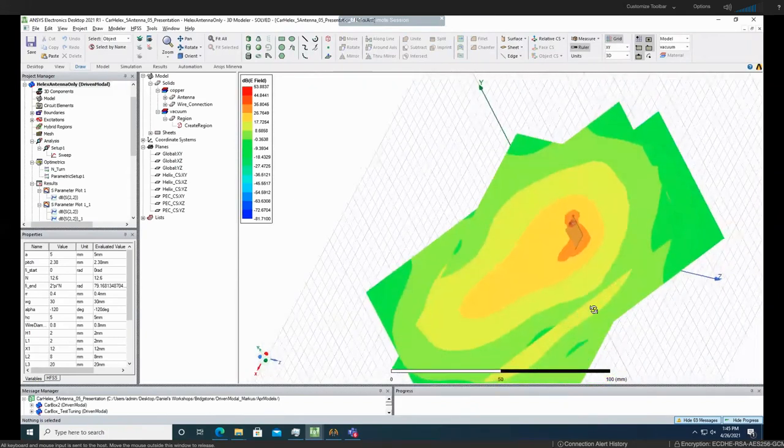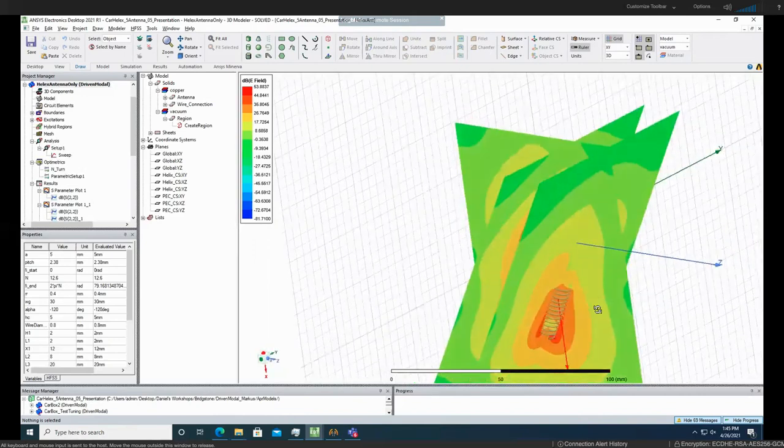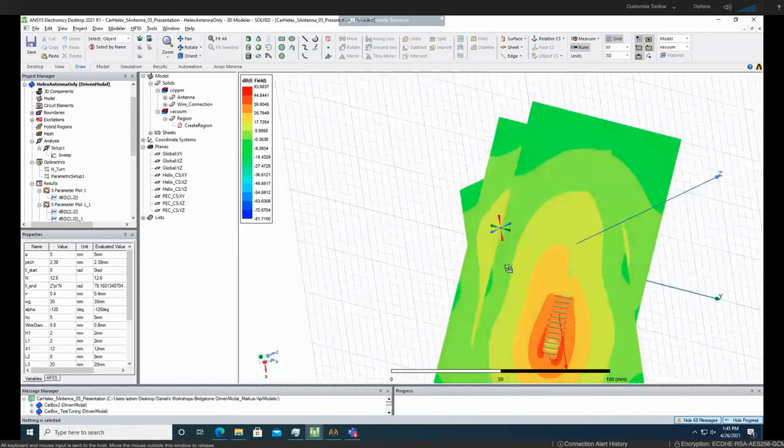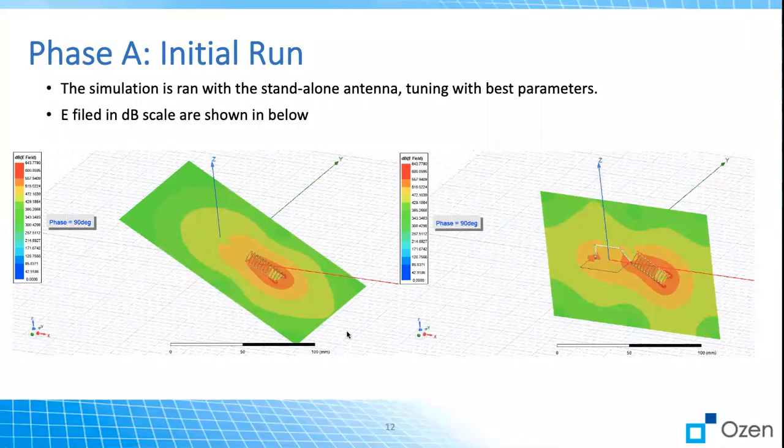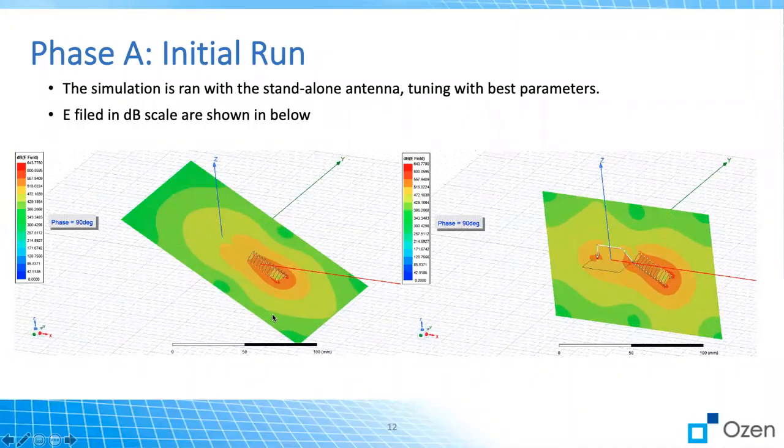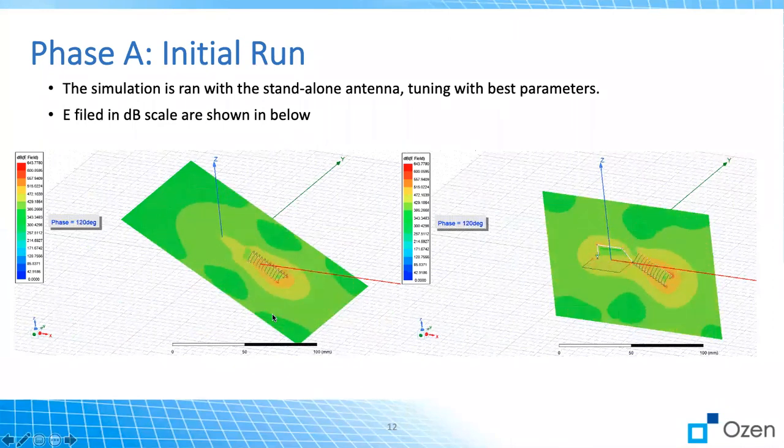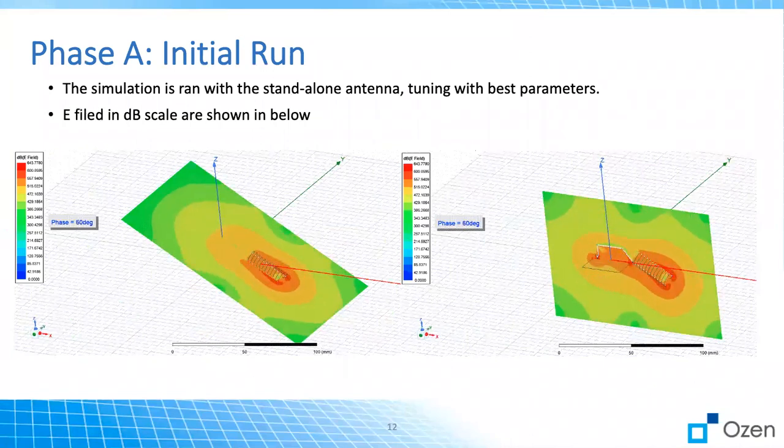So pay attention that at this point, it's only the antenna only. There is no rim, no car box, nothing. So once we do that, we're happy with the result. We go to the next one. Please feel free to check the next step in the next video.